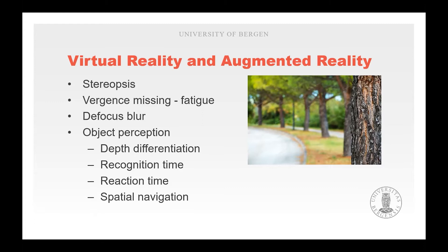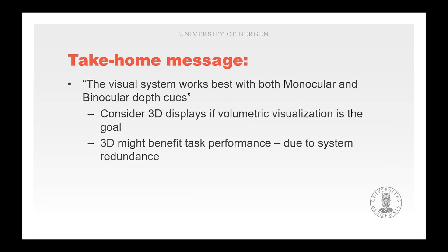Stereopsis plays a central role in both feature extraction and object perception, leading to higher depth acuity in 3D environments than 2D environments. In addition, 3D environments seem to facilitate faster recognition time, which is thought to be organized by the ventral stream, and faster reaction time and spatial navigation, which could be related to the dorsal and 'where' stream. Both of these are thought to be related to stereopsis.